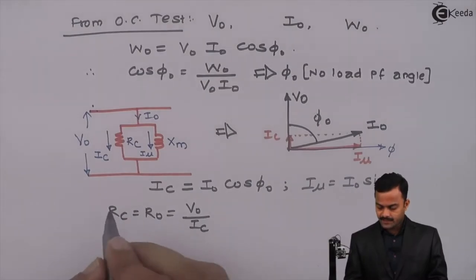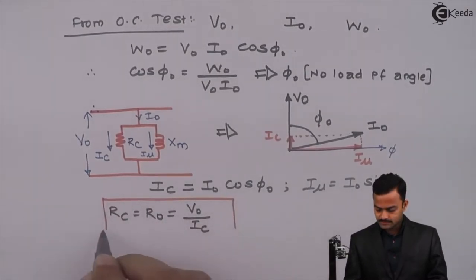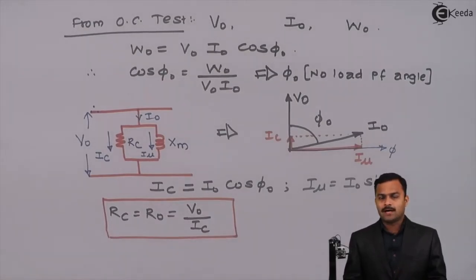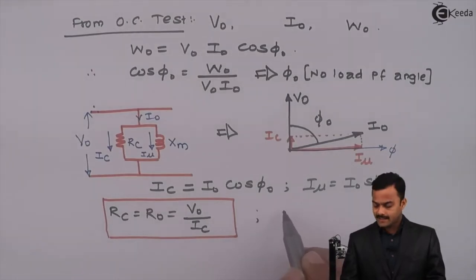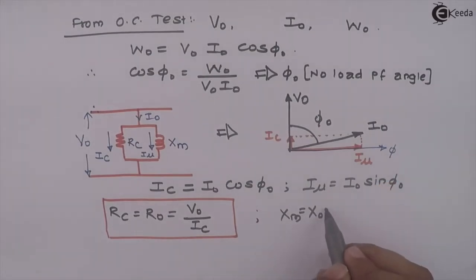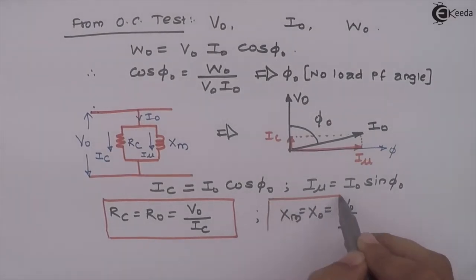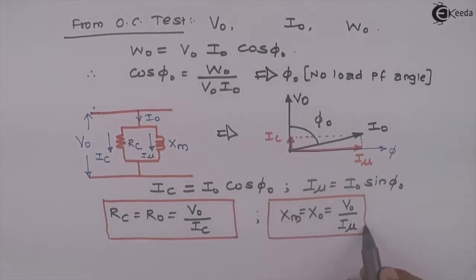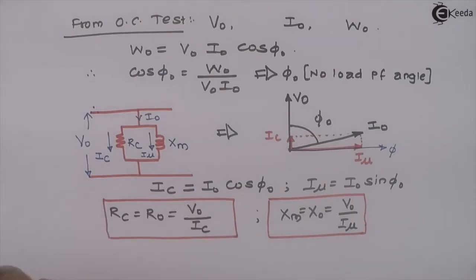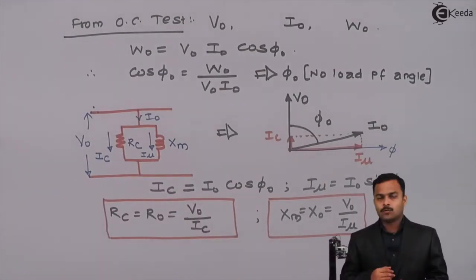From these two values we can get RC, also called no-load resistance R0, which equals V0 divided by IC. Similarly, magnetizing reactance Xm, also called no-load reactance X0, equals V0 divided by Iμ. These two parameters — RC and Xm — are the outcome of the OC test, along with the core losses measured by the wattmeter.